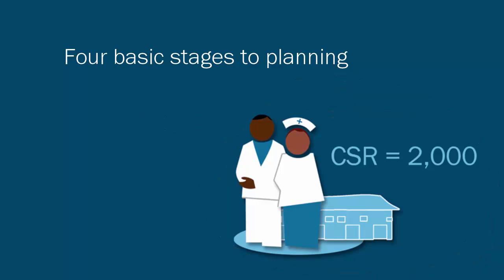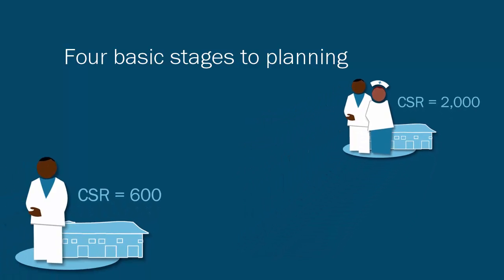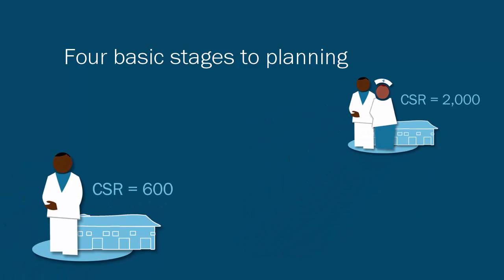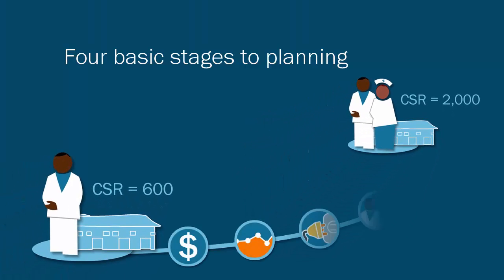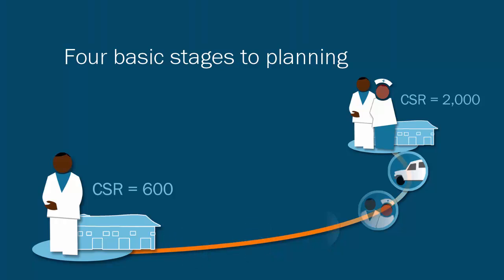In stage three, we work out how to get from here to there. We do this by logically arranging activities and selecting the best methods to help us get to where we want to be. Finally, we carry out our plan effectively and with efficient use of resources.